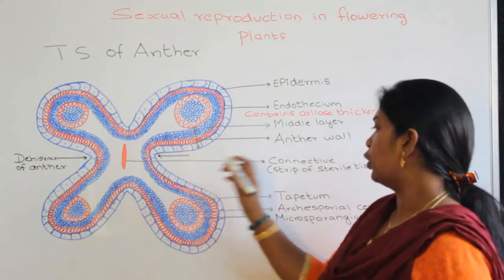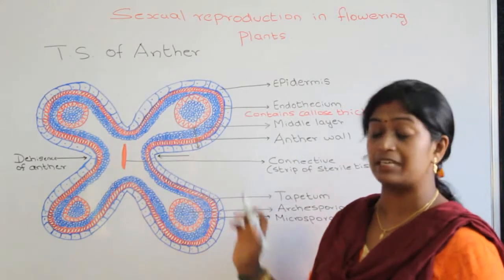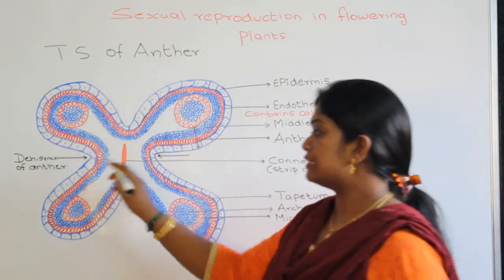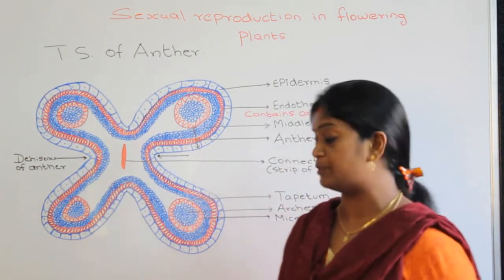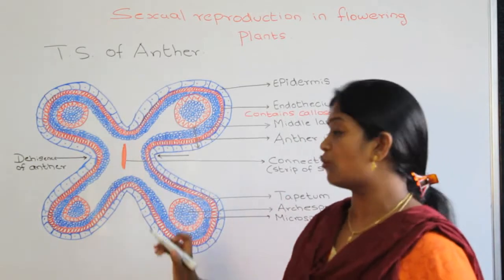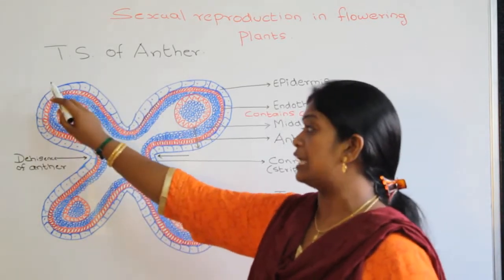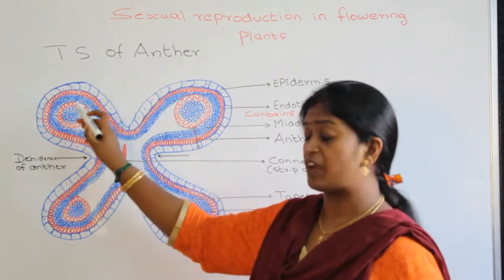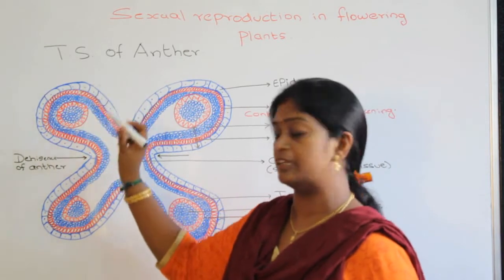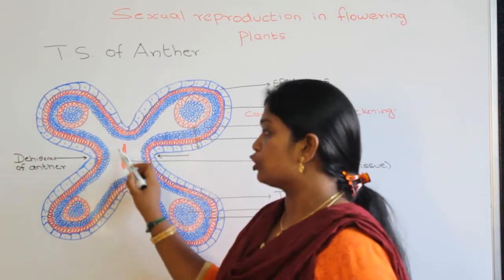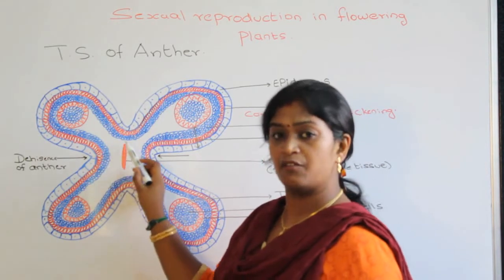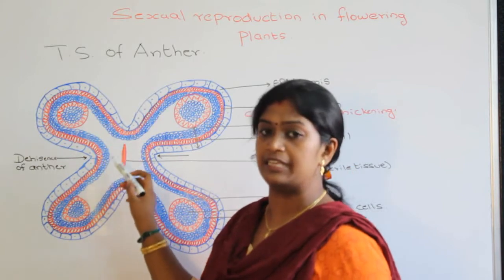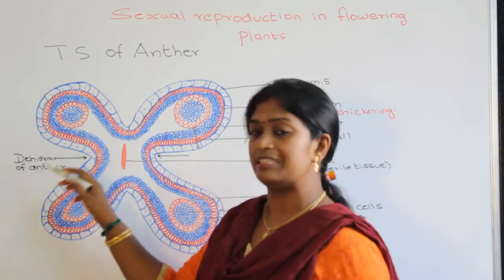At the centre we have a strip of sterile tissue called the connective, which connects the two lobes of the anther. This is the place where dehiscence of the anther takes place. During dehiscence, the three layers of the anther wall — the epidermis, endothecium, and middle layer — become fibrous. This fibrous nature makes the layers rigid, and the remaining unfibrous portion causes the dehiscence of the anther, which releases the pollen grains.